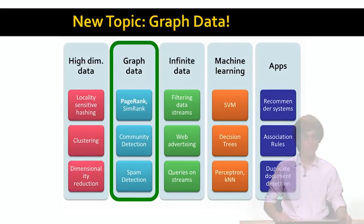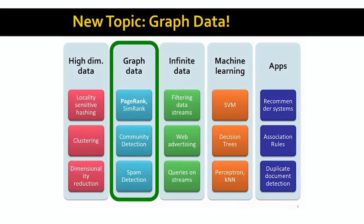Here is how the class fits together. We are starting with a new topic, with a new set of data — that is graph data. In this module of the class, we will look at link analysis methods like PageRank and SimRank, community detection where we want to find clusters of nodes in the network, and spam detection where we want to identify spam nodes in the graph. Those are the three modules for the graph data section.